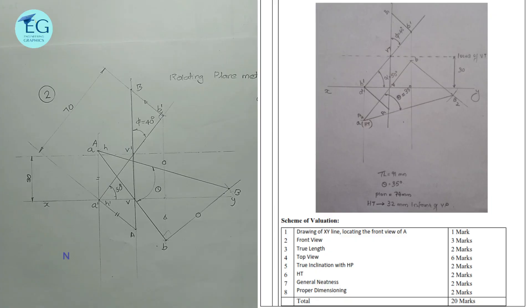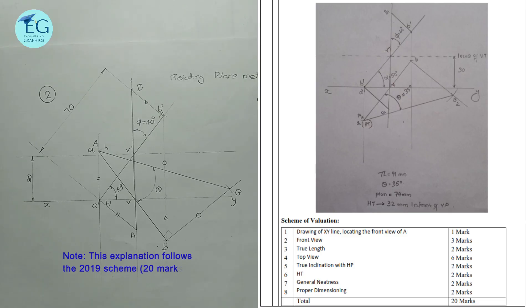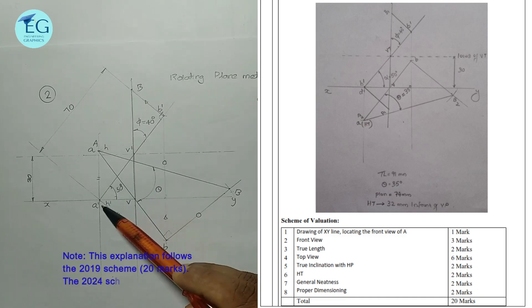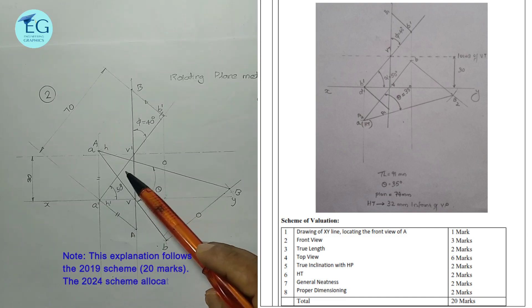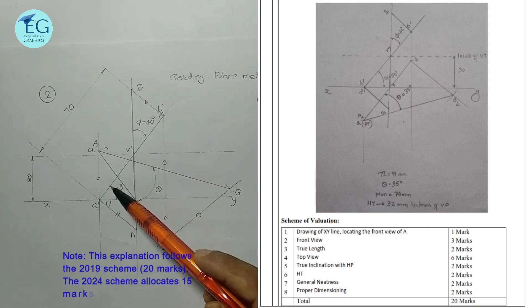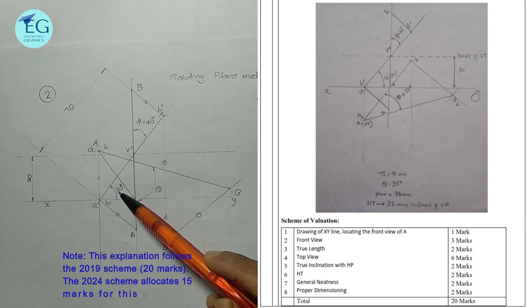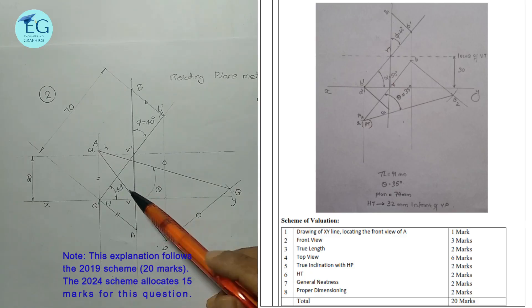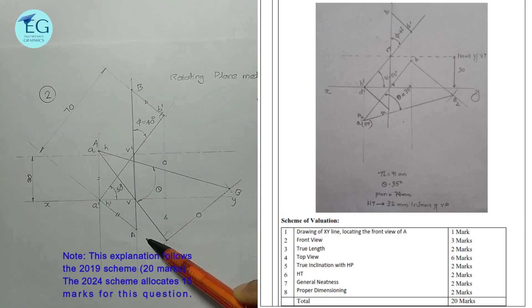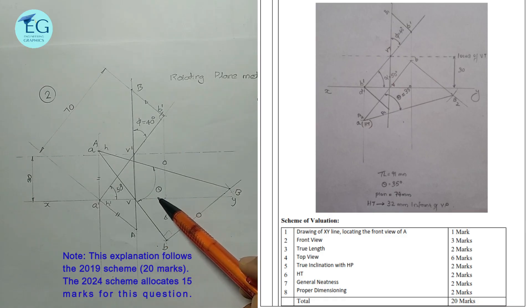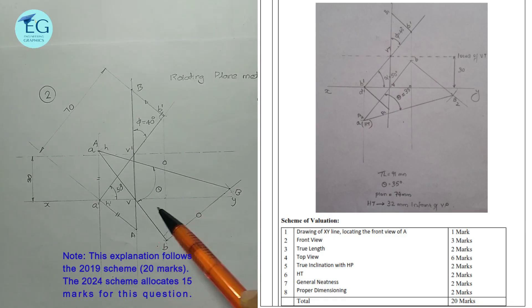The marking scheme: drawing the XY line and locating A' is one mark. Front view and true length are marked. Top view A-B is 6 marks. True inclination with HP is 2 marks. HT is 2 marks. General neatness is 2 marks. Proper dimensioning is 2 marks.